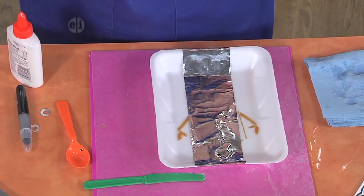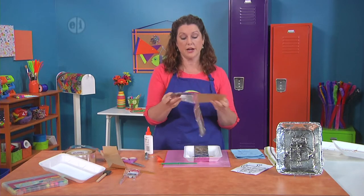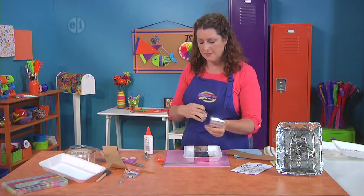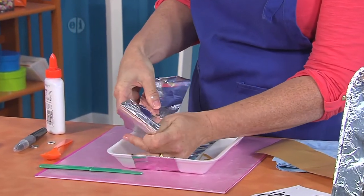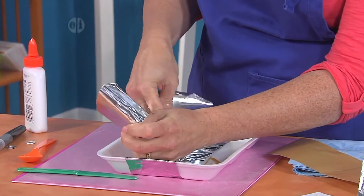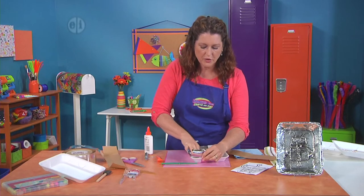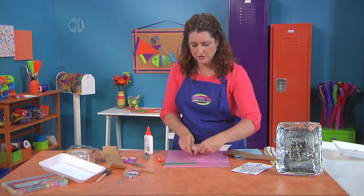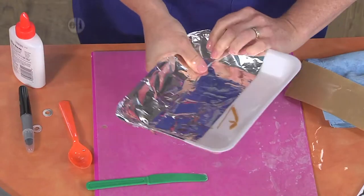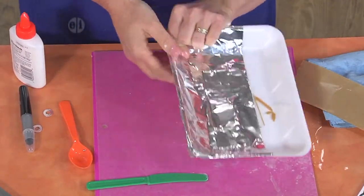And I'm going to repeat this with two more strips so that I've covered up the entire tray. Now if your flashing tape is a little longer or a little narrower, you can go ahead and add more strips as necessary. So let me put this down. It's a little crinkly, but see it just wraps right around the edge and you don't need any scissors or anything like that.